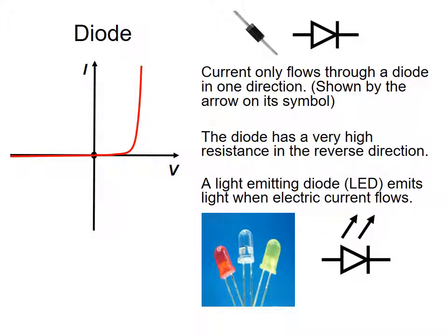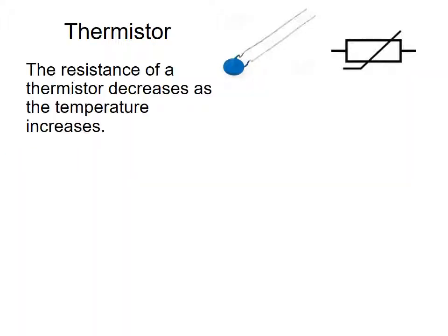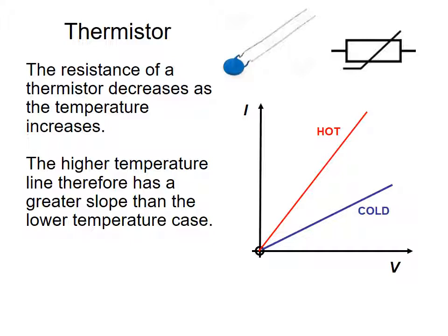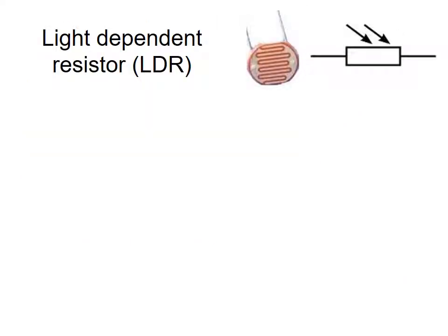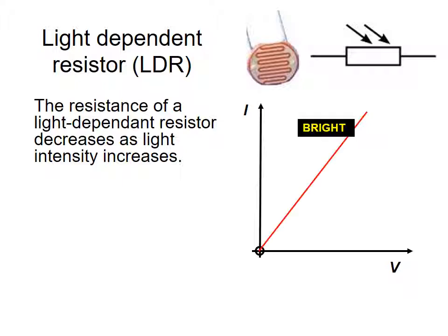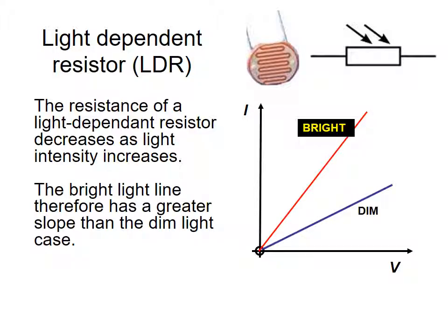A light-emitting diode emits light when electric current flows through it. For a thermistor, the resistance decreases as temperature increases — it is an ohmic resistor and you can see the difference between hot and cold: resistance is higher when colder and lower when hotter. The higher temperature line has a greater slope. For an LDR (light-dependent resistor), the resistance decreases as light intensity increases — so when light comes on the circuit will begin to operate. It is also an ohmic conductor, and resistance is much higher in dim light.